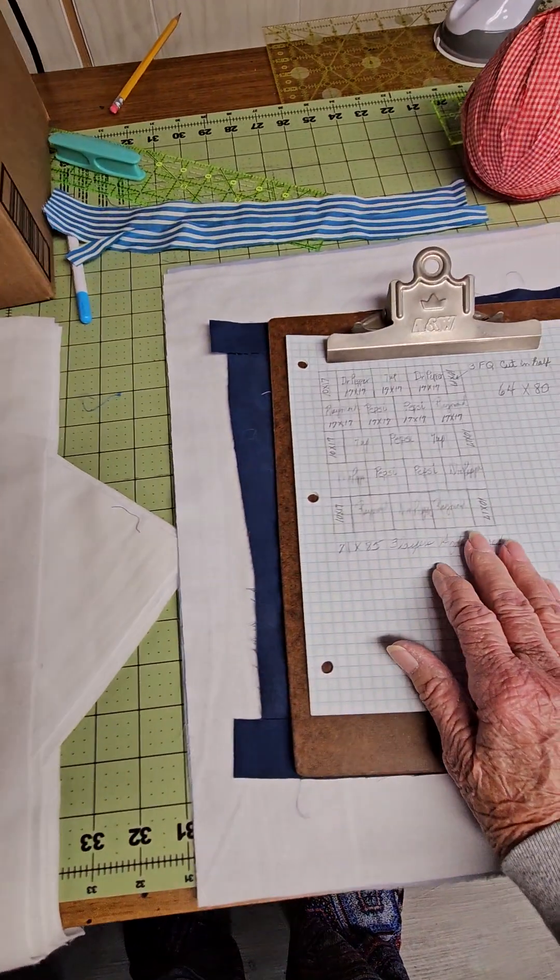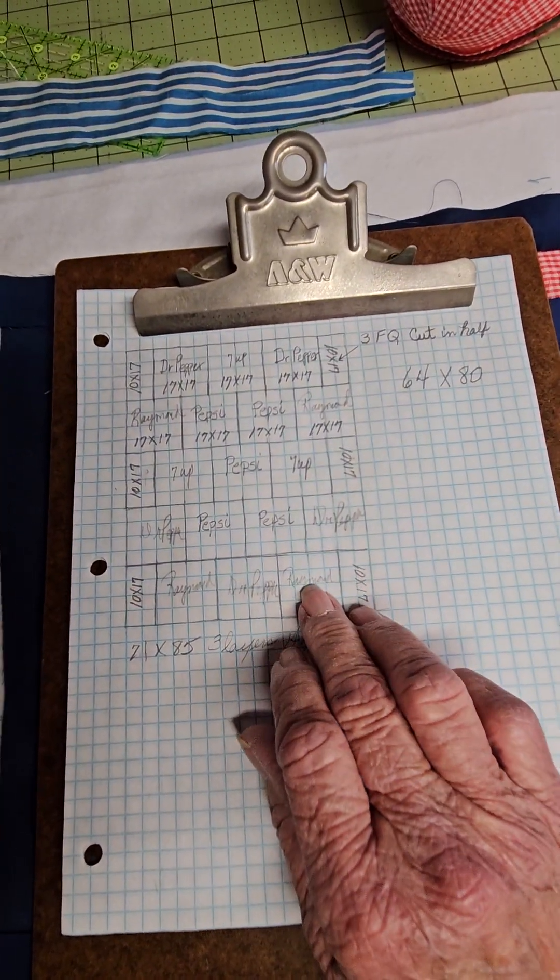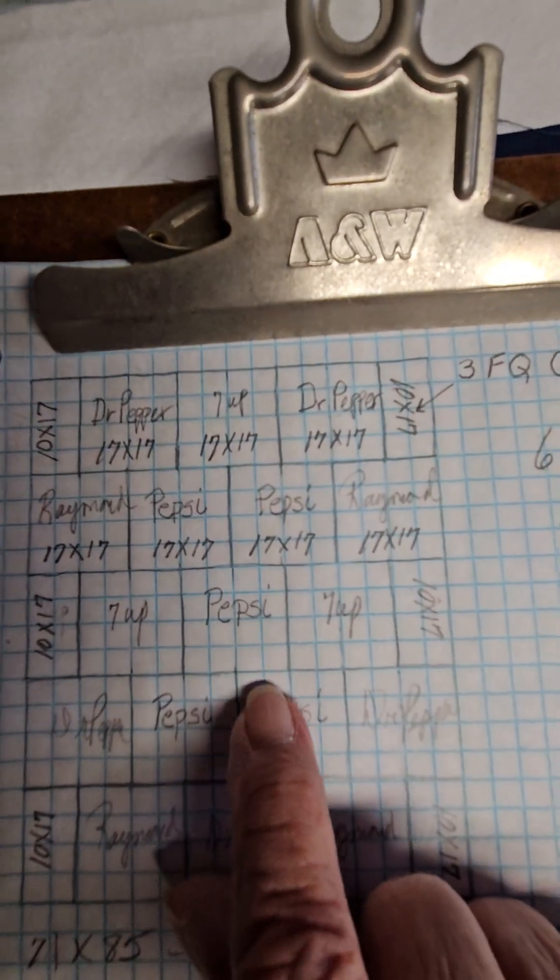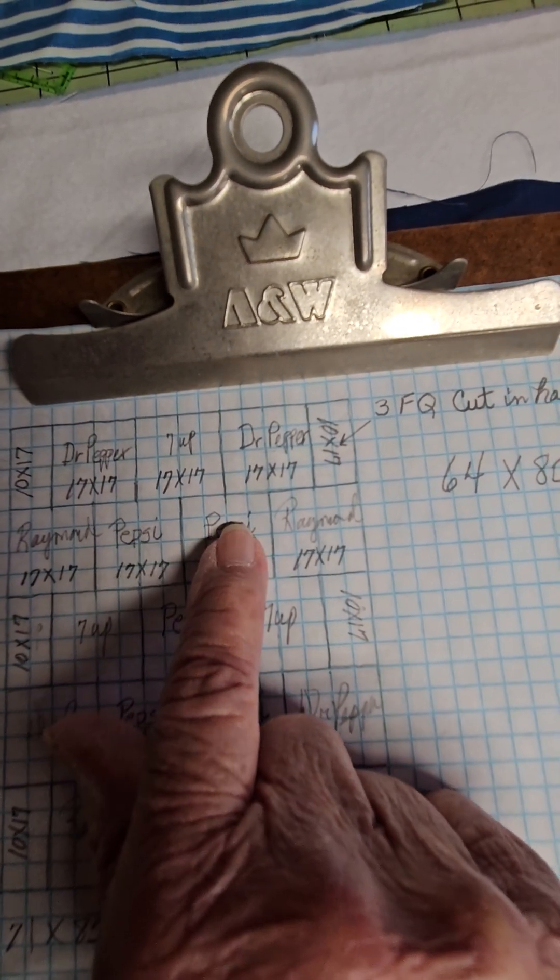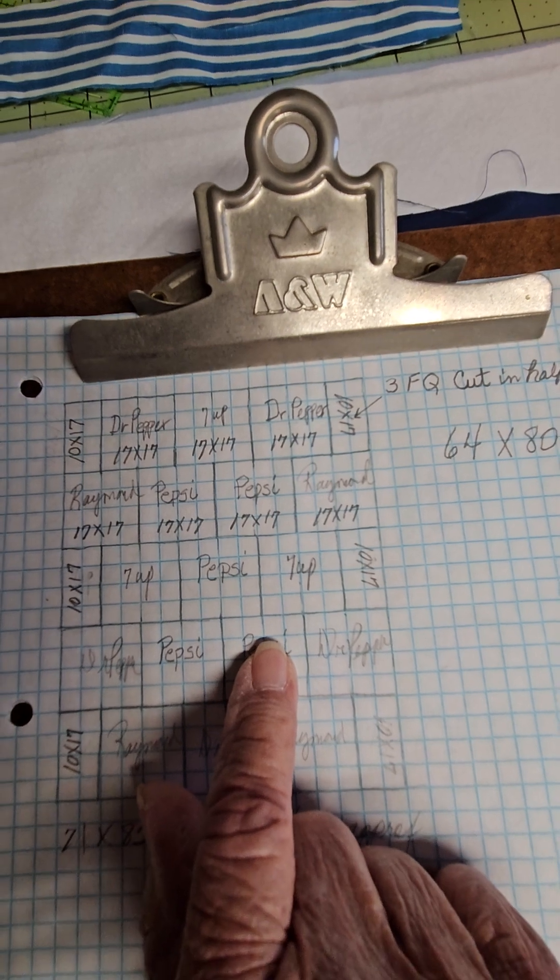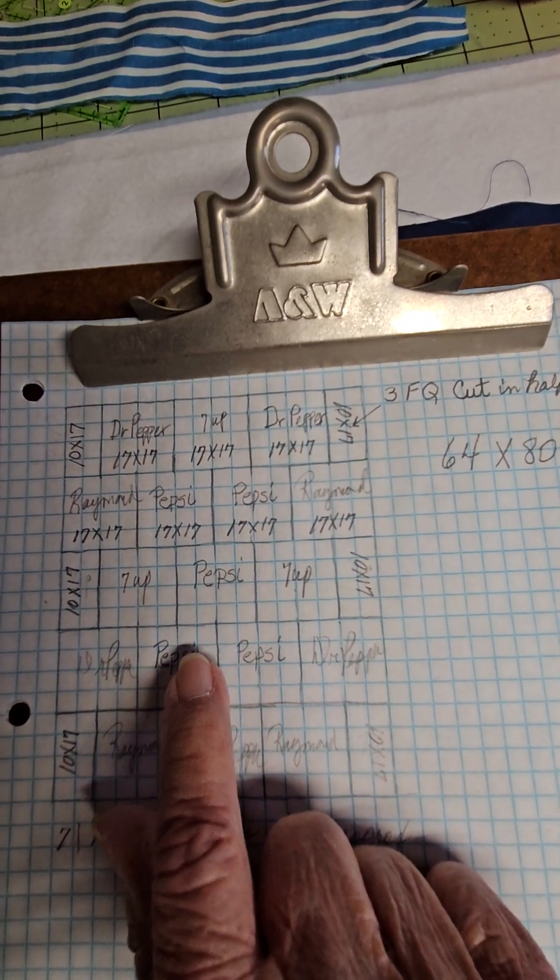I have six of these, and then there's going to be 17 full blocks. You can see I've got them laid out with a Pepsi in the center, two Pepsis here and two Pepsis here. There are five patches of each kind.